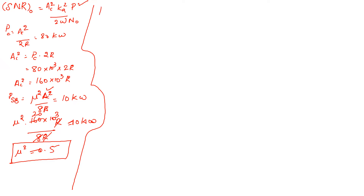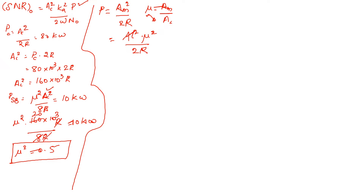Now we need to find the value for P, the power of the message signal. P is given by AM square divided by 2R. Since mu equals AM divided by AC, we can substitute AM as mu times AC, giving P equal to AC square times mu square divided by 2R. Since PC equals AC square divided by 2R, P equals PC times mu square.